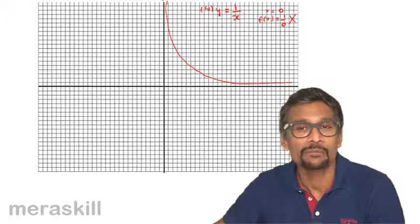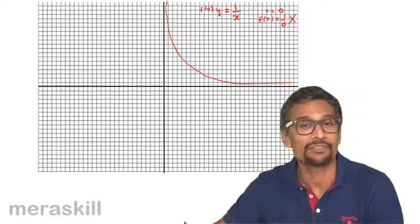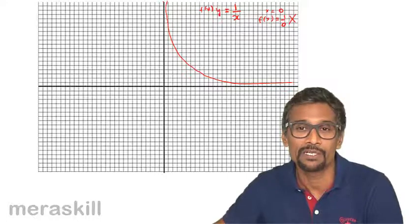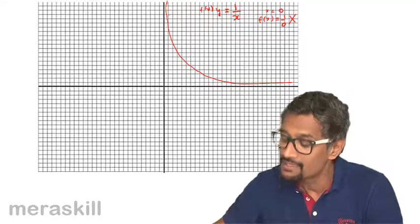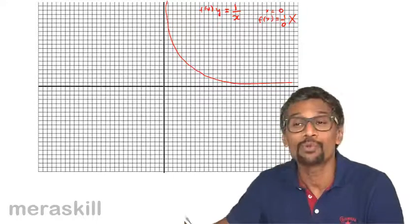So we say that X is coming closer and closer to 0, but it will never become equal to 0. And hence Y will attain a specific value, will limit itself to a particular value as X approaches a particular value. So this is a simple example of how we can use graphs for this.